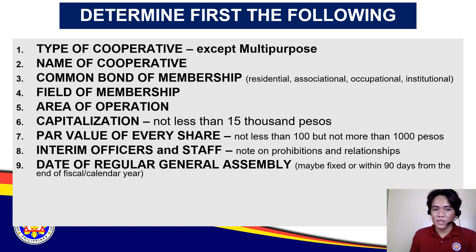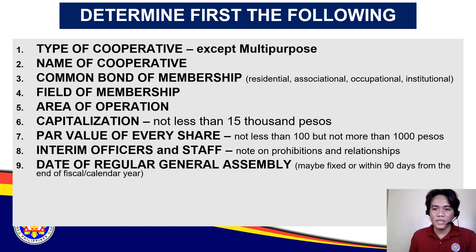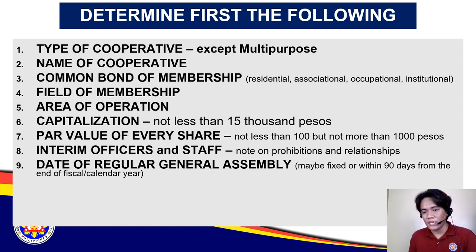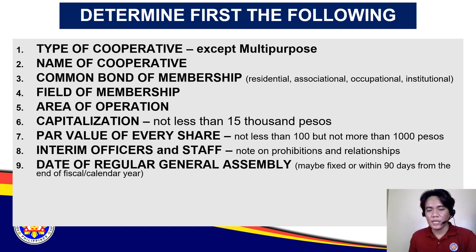Also, decide on the date of your regular general assembly. It can either be a fixed date or within 90 days from the end of the fiscal or calendar year. For example, a fixed date like February 14, February 28, or every last or third Saturday of the month. The 'within 90 days' option is more flexible — usually using the calendar year, so any day from January to March.